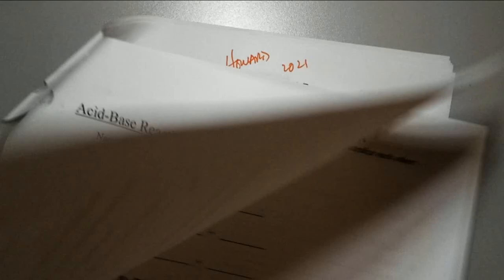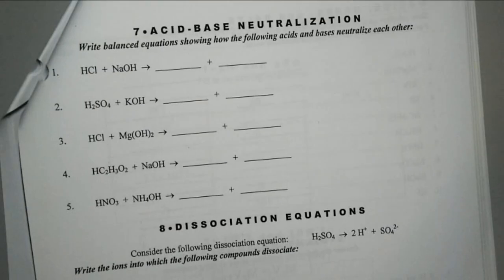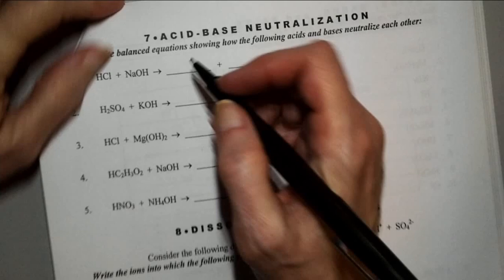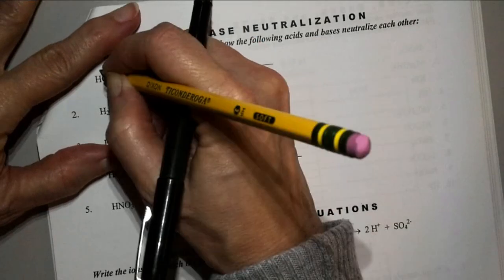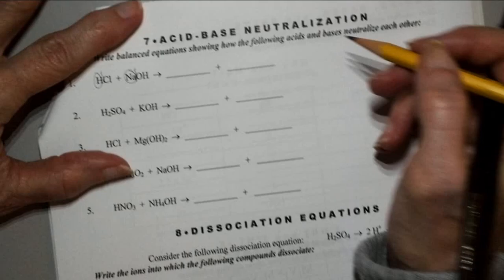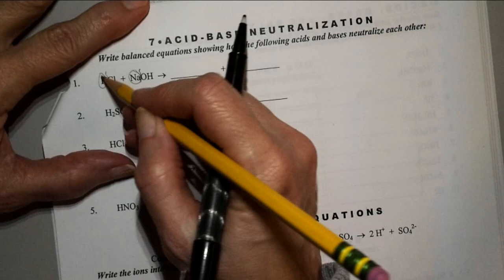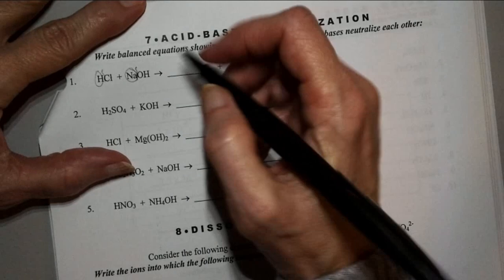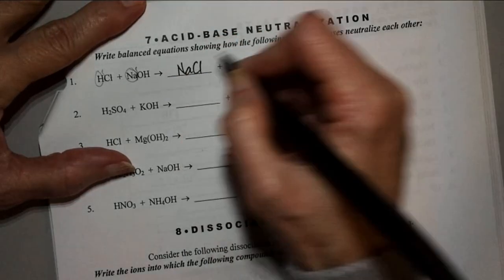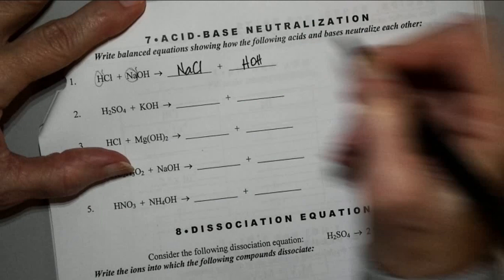Click to page 13. First thing I want you to do is write the products on these reactions. If we have HCl and NaOH, we know it's going to be a double replacement reaction — the first two pieces swap places. H is +1, Cl is -1, sodium is +1, hydroxide is -1. Everything's one, so I can just swap these. On the other side I have NaCl and HOH — water. When you have an acid-base reaction, one of the products will always be water. Always.